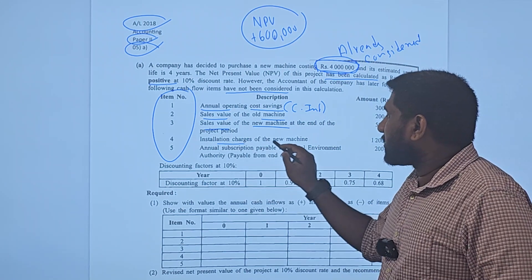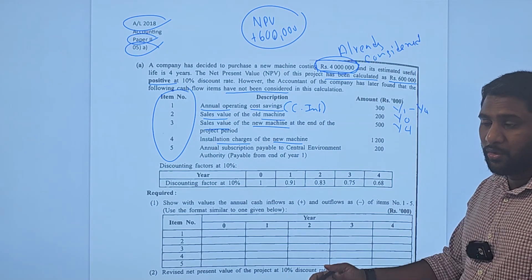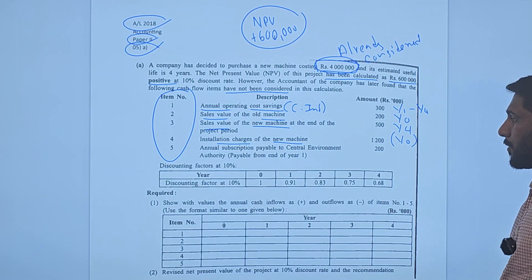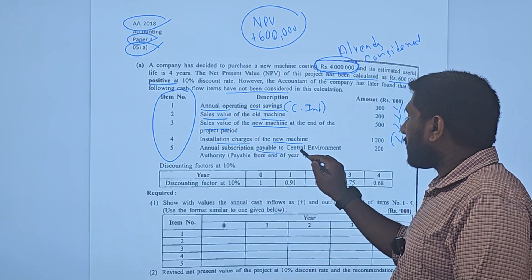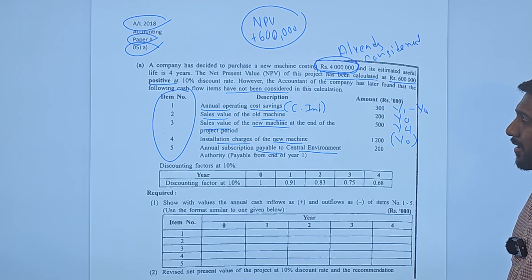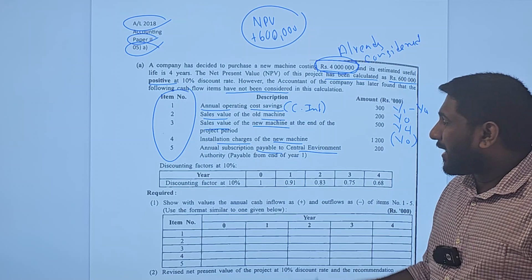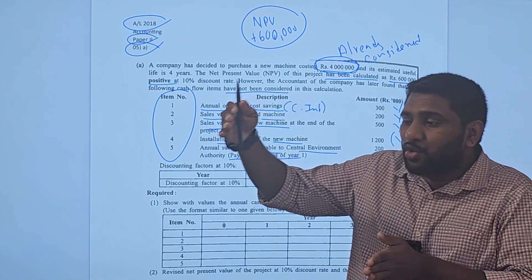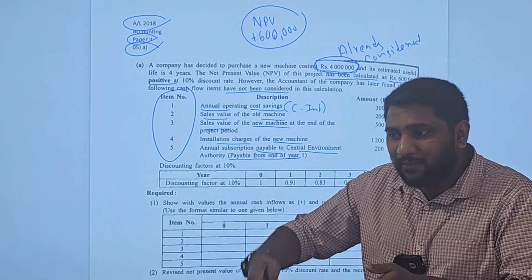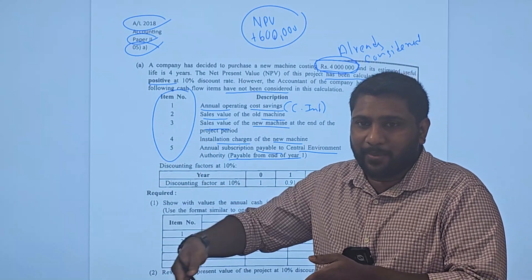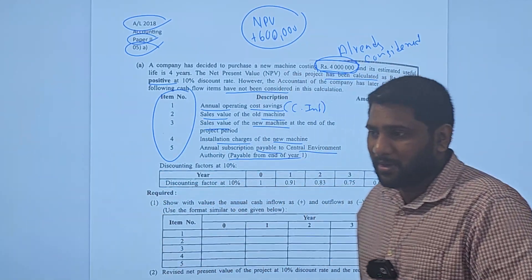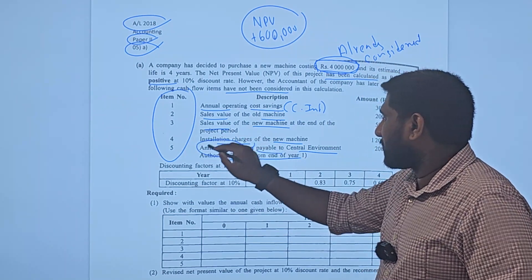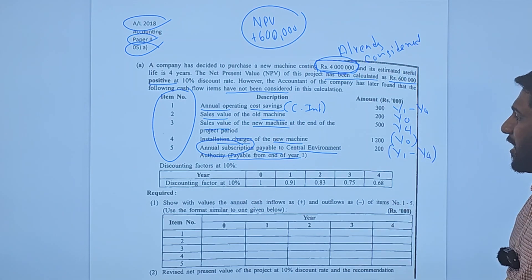Next, installation charges of the new machine: you will have to install the new machine and pay that amount, so this is a cash outflow for Year 0. And finally, they have given an annual subscription payable to the central environment authority — 200,000 payable from end of Year 1. That means we are not making the payment in advance; at the end of each year (Year 1 through Year 4) we will pay 200,000, so these are annual cash outflows.